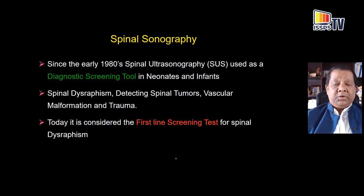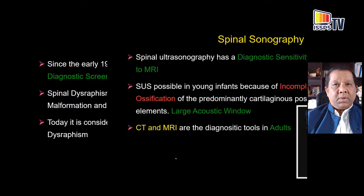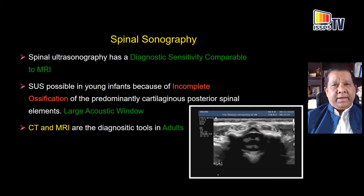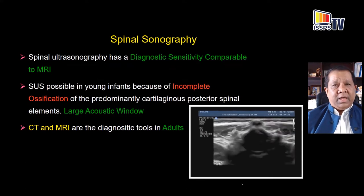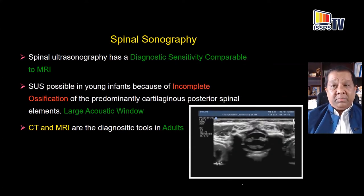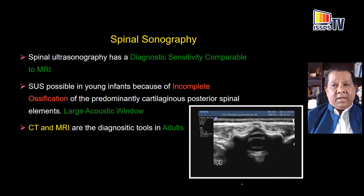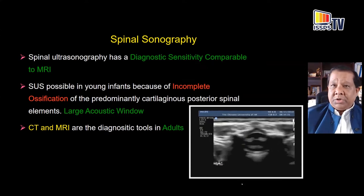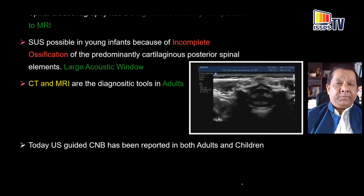Because it's not possible to take young children into the MR suite, ultrasound is a practical alternative. Because of incomplete ossification of the posterior elements in neonates, as Professor Margul illustrated in cadaver images, the neuraxial anatomy can be seen very clearly on ultrasound. It can in fact supplant CT and MR imaging, and the diagnostic sensitivity is comparable to MRI in these young babies. But that's not the case in adults.